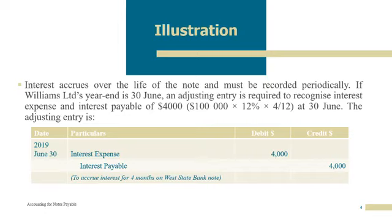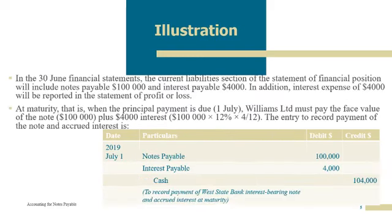Take note the due date will be 1st July, not 30th June. So in this case, we haven't paid this interest, so we will have to accrue. In the 30th June financial statement, the current liability section of the statement of financial position will include notes payable and interest payable — notes payable $100,000 and interest payable $4,000. In addition, the interest expense of $4,000 will be reported under the statement of profit or loss.